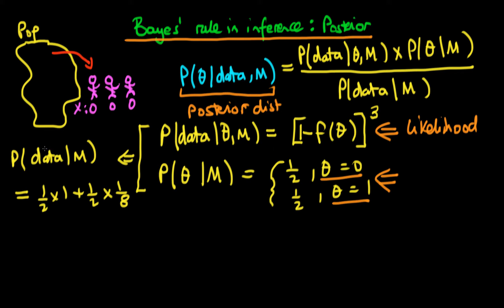And we put these two things together to help us to derive the denominator, which was equal to basically a marginal probability when we've summed over values of theta, and that gave us a half times one plus a half times an eighth, where the halves here are the prior, and the one and the one-eighth in this example are the likelihoods.